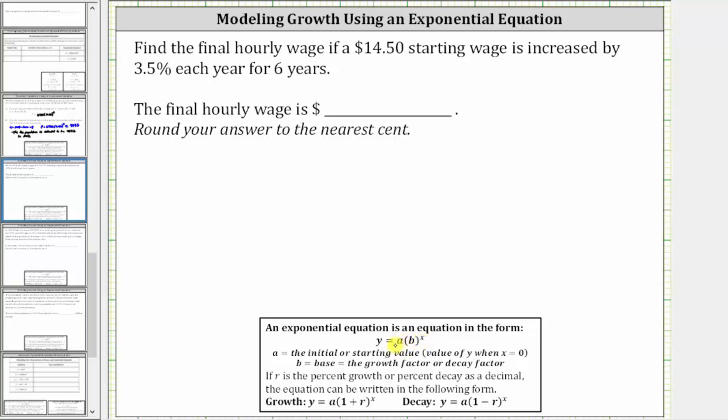Where a is the initial or starting value. And because the wage is increasing by 3.5% each year, we will have exponential growth, and therefore the base b is equal to one plus r, where r is the percent growth as a decimal. So our equation will be in the form of y equals a times the quantity one plus r raised to the power of x.